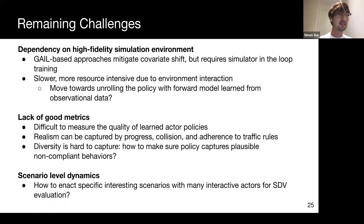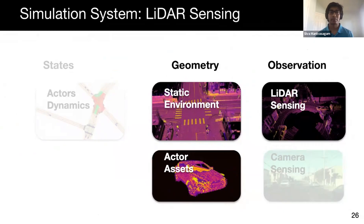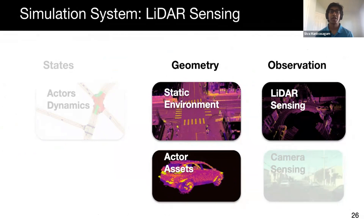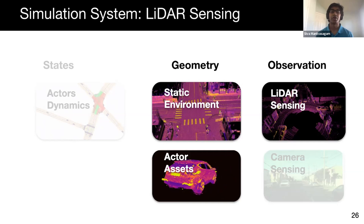I will now pass it to Siva to discuss how we can simulate a sensor observation system to complete the entire simulation system. Thanks, Simon. Hi, my name is Siva and I'm a research scientist at Uber ATG. While there are a suite of different sensors on a self-driving car—such as LiDAR, camera, radar, IMU, infrared, and so on—we focus this discussion on LiDAR and camera, as they are the sensors most prevalent in self-driving cars in industry.